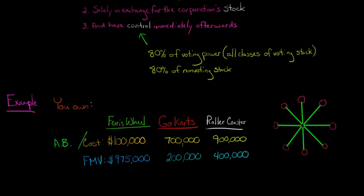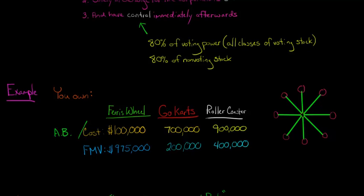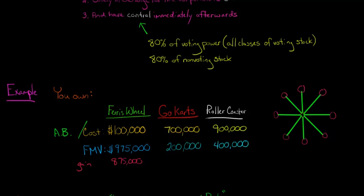The Ferris wheel has an adjusted basis of $100,000, but the fair market value is $975,000, which means there's a built-in gain of $875,000. The go-karts have an adjusted basis of $700,000 but a fair market value of $200,000, so there's a built-in loss of $500,000. That does not mean you're recognizing a loss on the transfer — it's a built-in loss. This is a tax-free transfer because we're transferring property in exchange for stock.